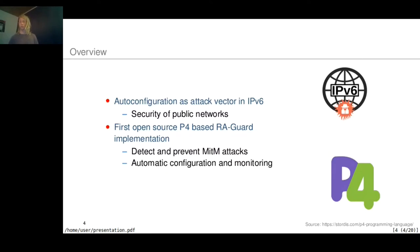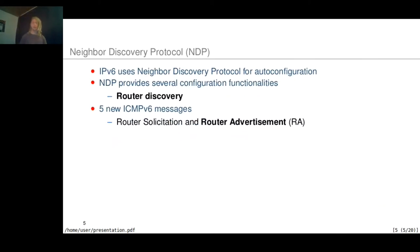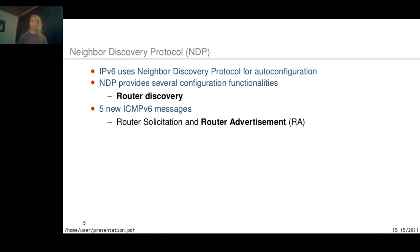This implementation should enable researchers to further study this IPv6 security mechanism. The Neighbor Discovery Protocol NDP is used by IPv6 for auto-configuration of networks. NDP provides nine functionalities overall, including the router discovery functionality. The NDP protocol introduces five new ICMPv6 messages, including the router solicitation and the router advertisement, which are used for router discovery. In this work, we are mainly focusing on the router discovery mechanism.